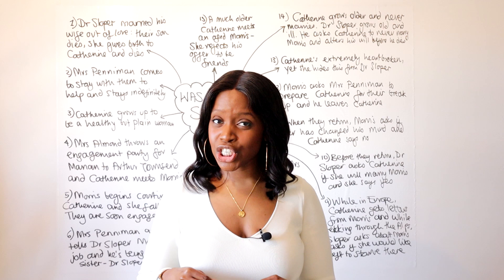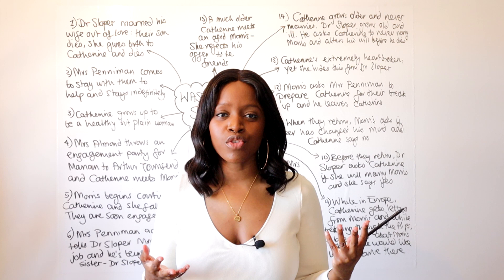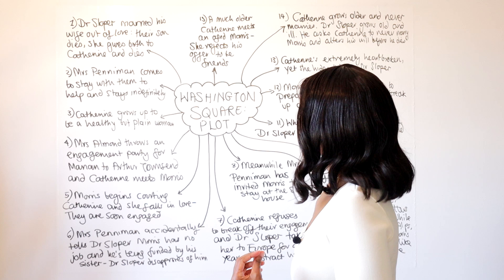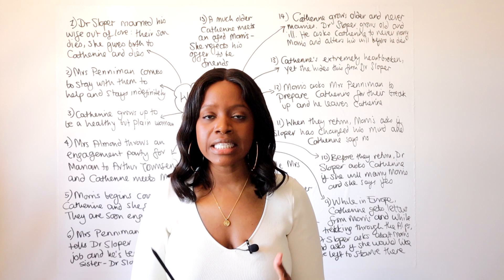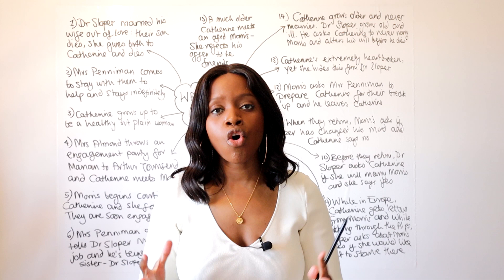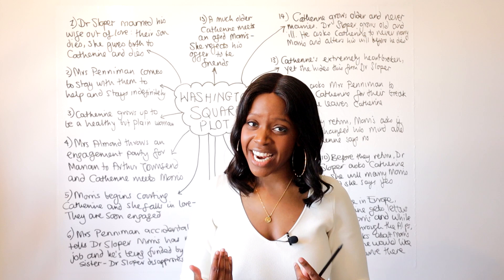Whether you're a student studying Washington Square as part of your upcoming exams, or simply somebody who has enjoyed reading Washington Square by Henry James and wants to recap on key events, I thought it would be useful to create a plot summary — essentially a mind map of all the key events that happen within this story.